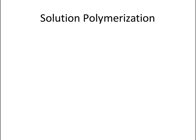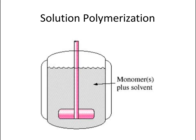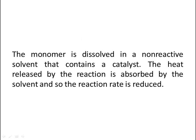Now let's talk about solution polymerization. The figure shows a similar setup to the previous one, with monomers as well as solvent. In this process, the monomer is dissolved into a non-reactive solvent that contains a catalyst. The heat released by the reaction is absorbed by the solvent, so the reaction rate is reduced.